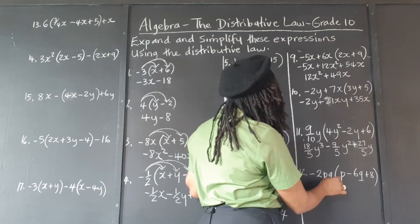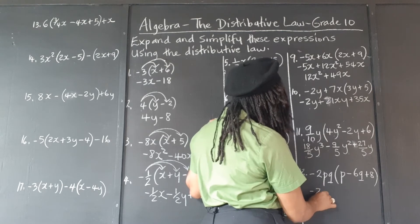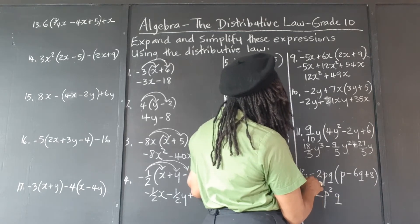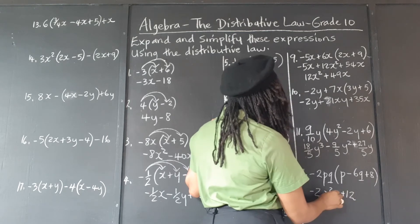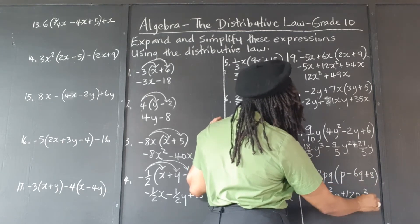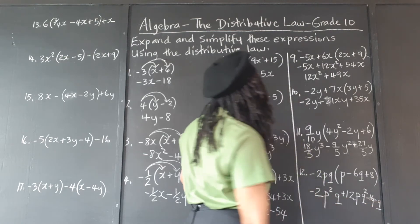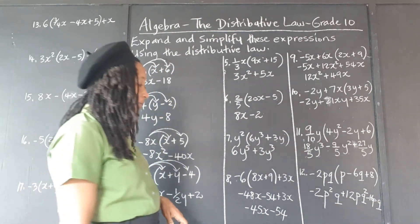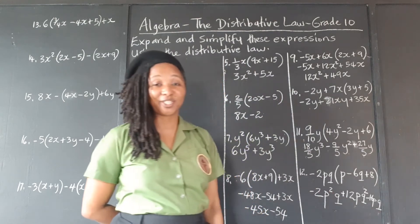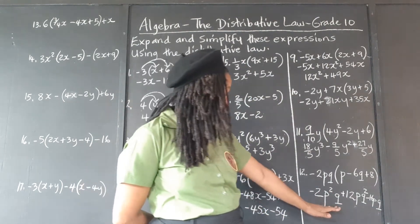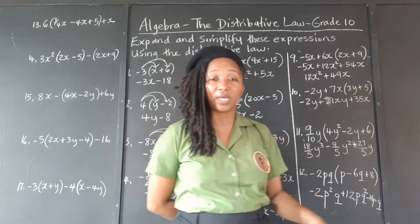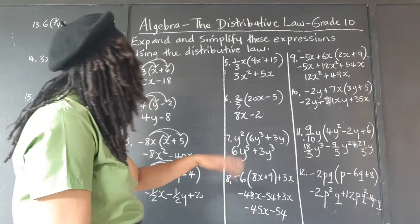Here we have negative 2p cubed times p, so that's negative 2; p cubed times p is p to the fourth. Negative 2 times negative 6 is positive 12; p times q squared gives pq squared. Negative 2 times 8 is negative 16, and we have p cubed. All terms — p squared q, pq squared, and pq — are different terms; we cannot add or subtract them. So that's how we leave them.